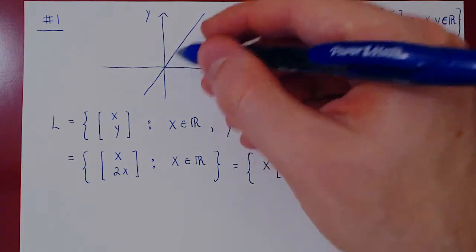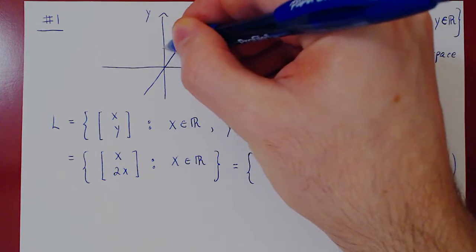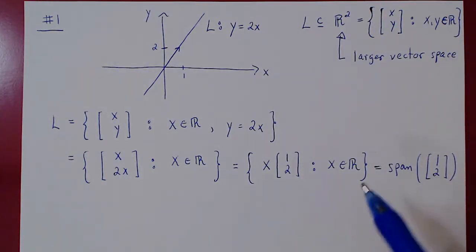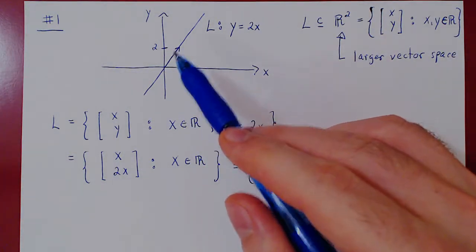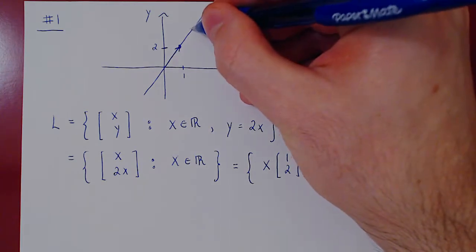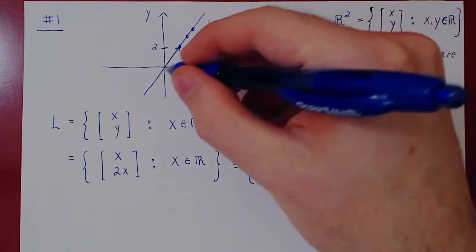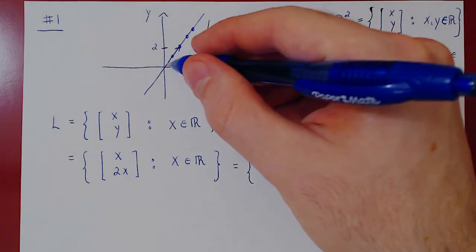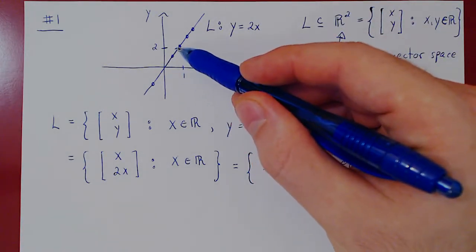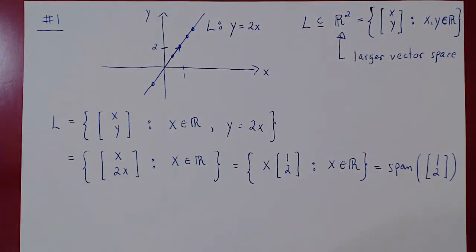Geometrically, consider the vector with x equals 1, y equals 2. Taking 1 times this vector gives one point; 2 times gives another; 1.5 times gives another; 1/2 times gives another; negative 1 times gives another, and so forth. As we take every possible scalar multiple of this vector, we get every point on the line. This is what we have just proved algebraically.